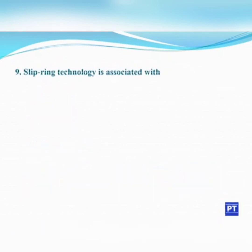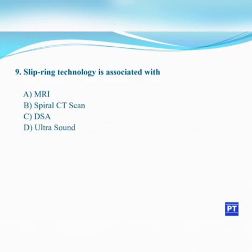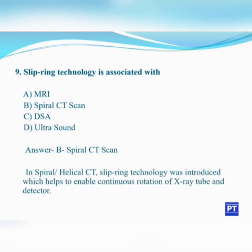Ninth question: slip ring technology is associated with? A. MRI, B. Spiral CT scan, C. DSA, D. Ultrasound. The answer is B, Spiral CT scan. In spiral or helical CT, slip ring technology was introduced to enable the continuous rotation of the X-ray tube and the detector around the patient.